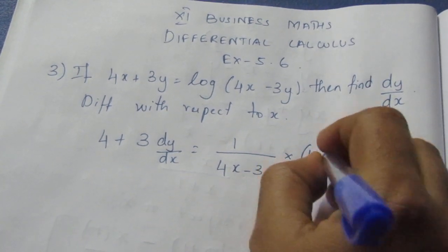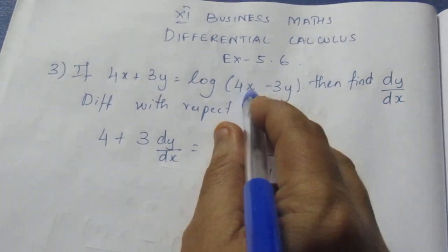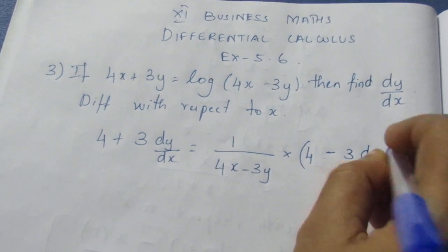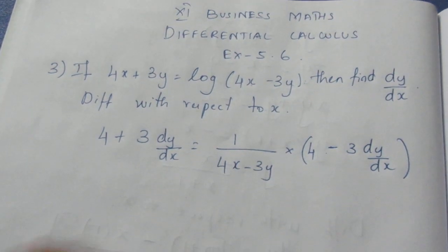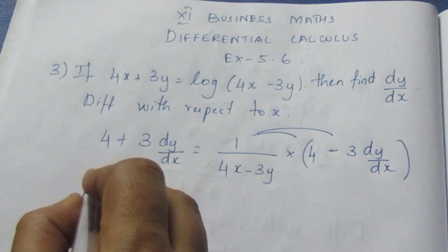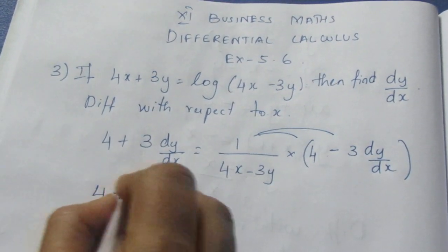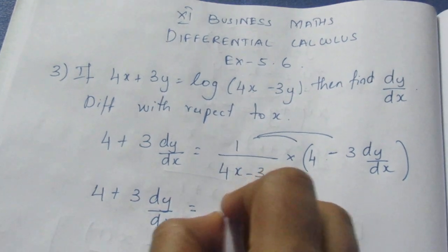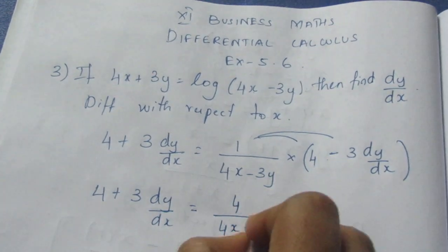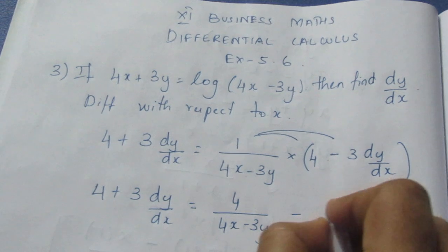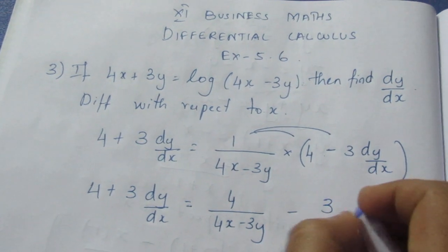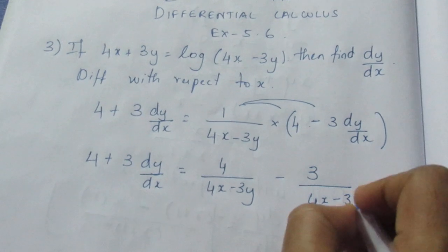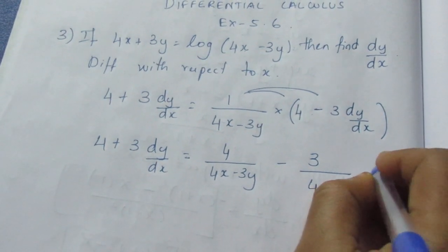The inner function differentiation gives us 4 minus 3 into dy by dx. So we have: 4 plus 3 dy by dx is equal to 4 by (4x minus 3y) minus 3 by (4x minus 3y) into dy by dx.